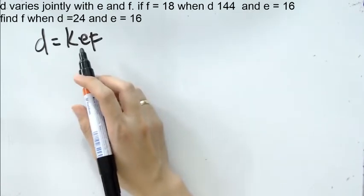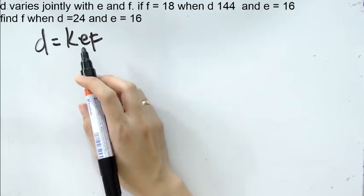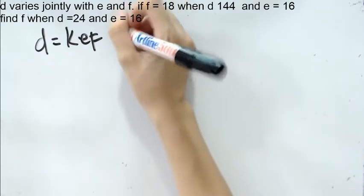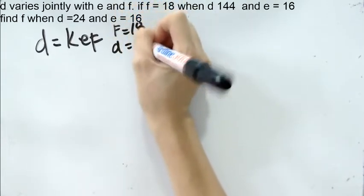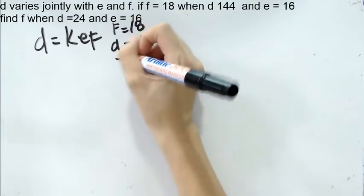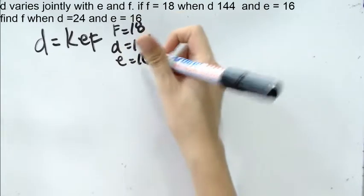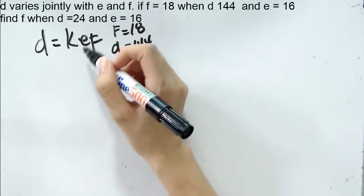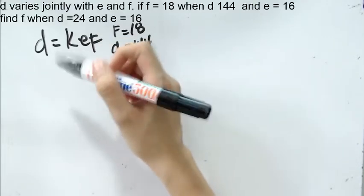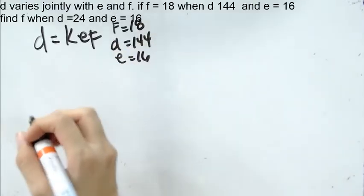Just like in direct and inverse variation, we solve first for the value of K based on the given. We have here F as 18, D is 144, and E is 16. So we just need to substitute these values to here so that we are going to be able to solve for the value of K.